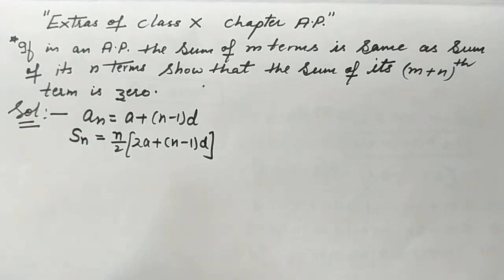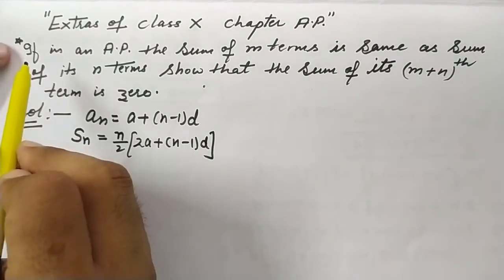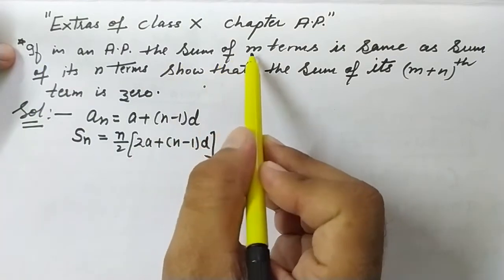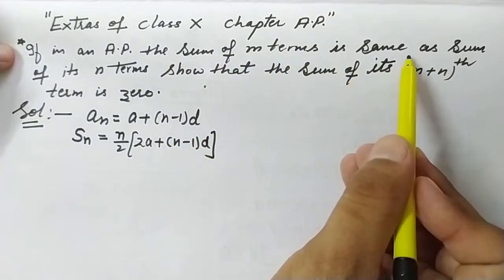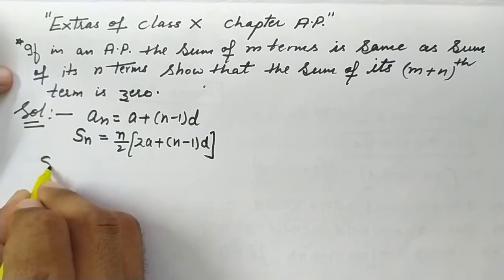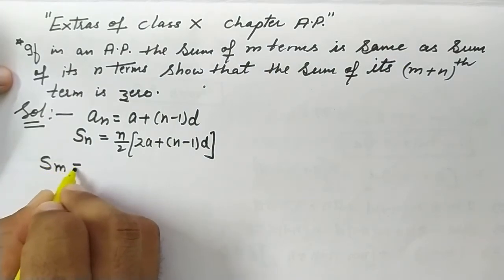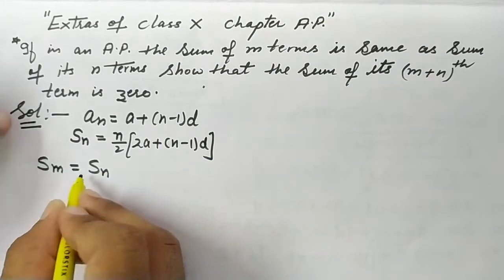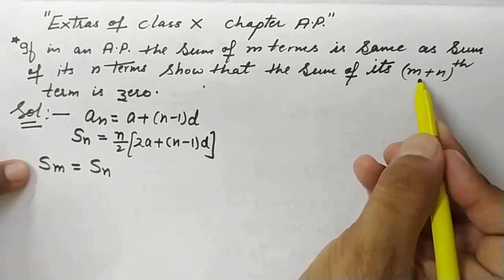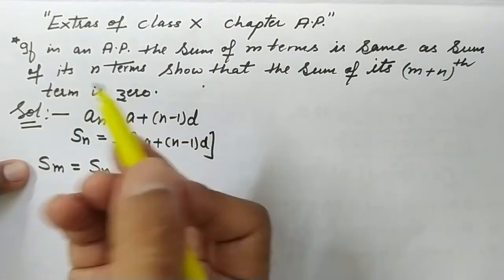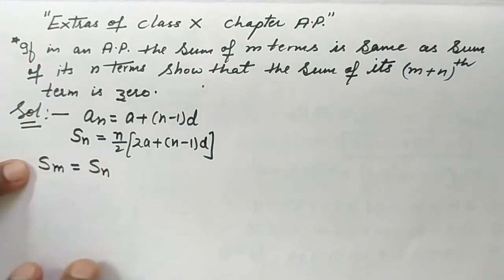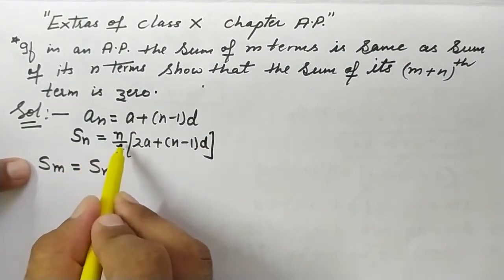We will be using these two formulas in this question. It is given that the sum of m terms is the same as the sum of n terms, meaning Sm = Sn. We need to show that S(m+n) = 0.